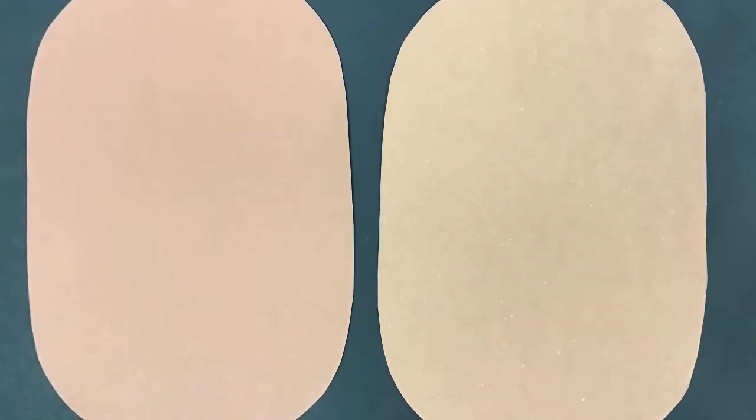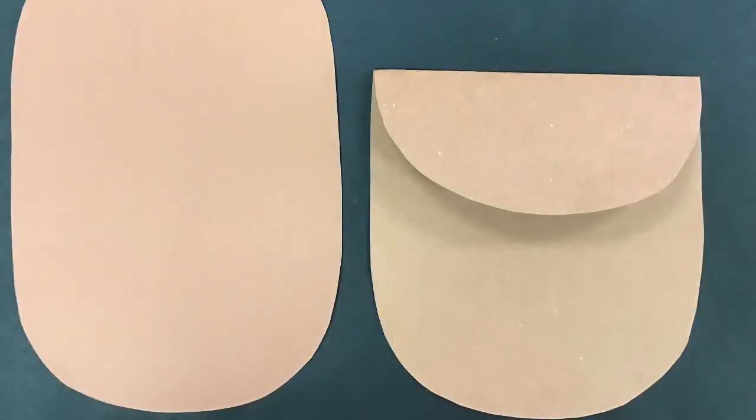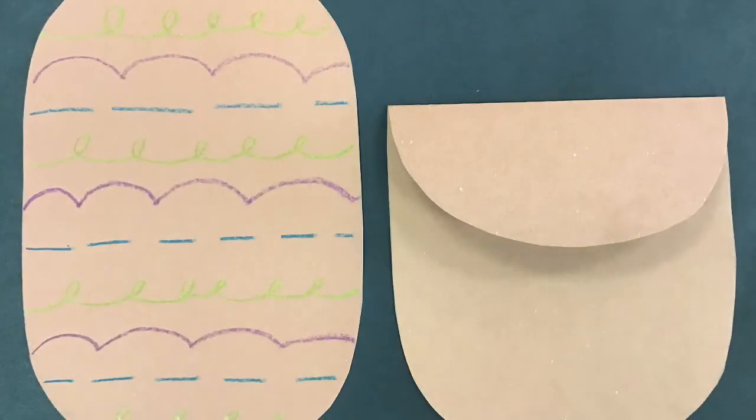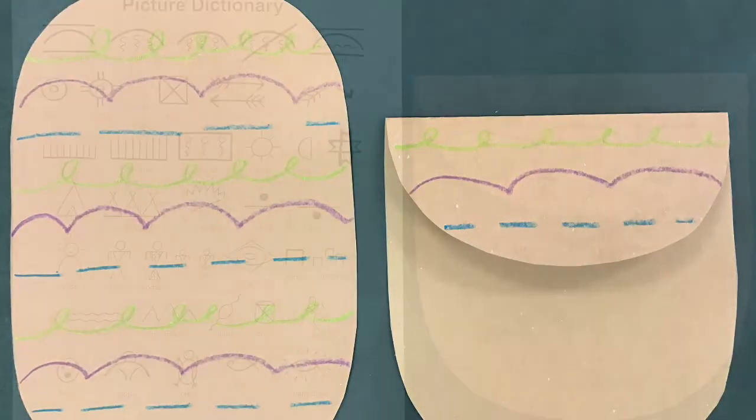Now you should have two big ovals. You're going to take one of them and fold it down just a little bit so that there will be a nice flap, and then you'll make a pattern like we did on the baby blanket, on the flap and on one big oval.